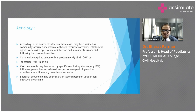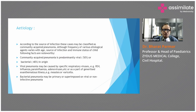What is the etiology of pneumonia? According to the source of infection, cases may be classified as community-acquired pneumonia. The frequency of various etiological agents varies with age, source of infection, and immune status of the child. The following facts are noteworthy.